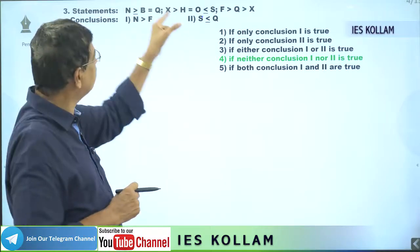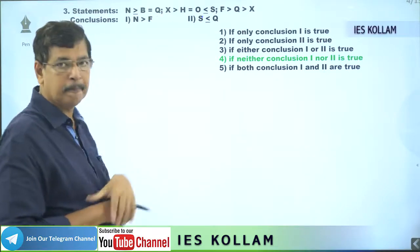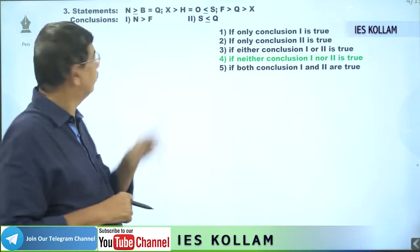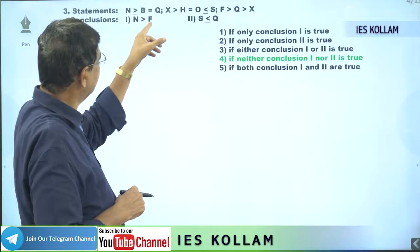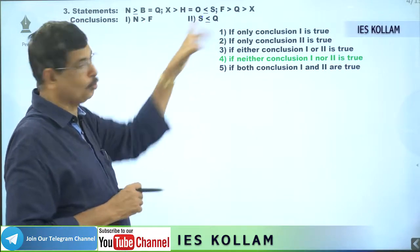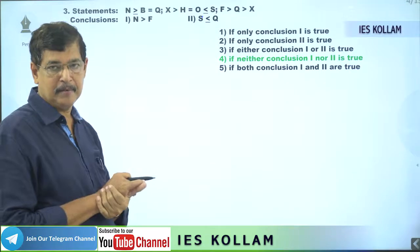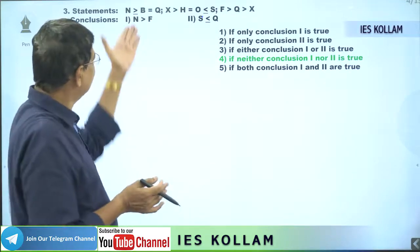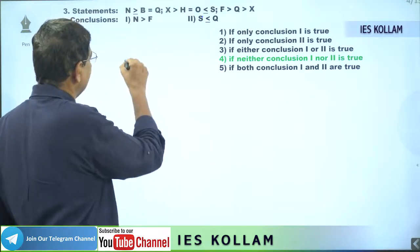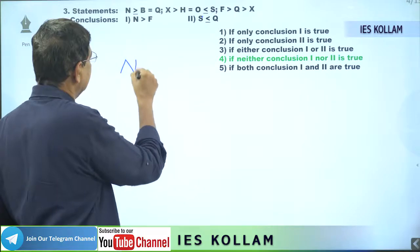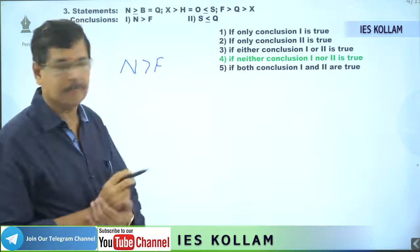They are separated by that semicolon. Here, the two conclusions are also given: n greater than f, and s less than or equal to q. We have to check the first conclusion. We can start from there: n greater than f — that we have to check.